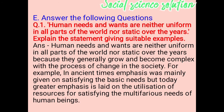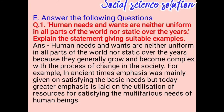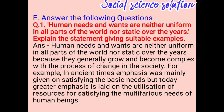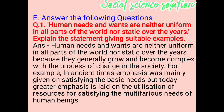Human needs and wants are neither uniform in all parts of the world nor static over the years. Explain this statement with a suitable example. Human needs and wants are neither uniform in all parts of the world nor static over the years because they generally grow and become complex with the process of change in society. For example, in ancient times emphasis was mainly on satisfying basic needs, but today great emphasis is placed on the utilization of resources for satisfying the multifarious needs of human beings.